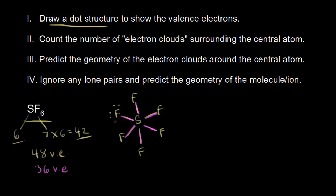Fluorine is going to follow the octet rule, and since each fluorine is already surrounded by 2 electrons, we're going to give each fluorine 6 more. Now each fluorine has an octet of electrons around it. Adding 6 electrons to 6 atoms: 6 times 6 is 36, so I have now represented all of my valence electrons, and we're done with our dot structure.